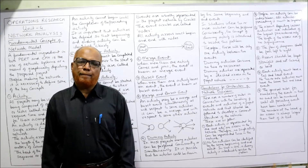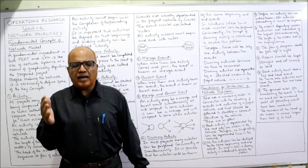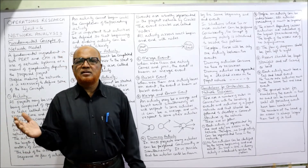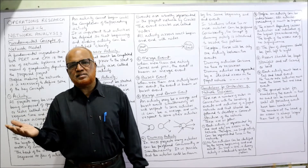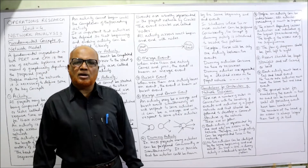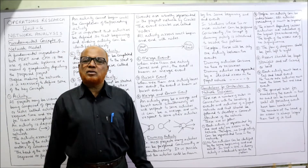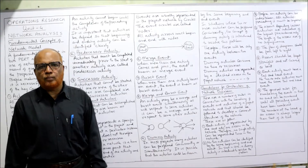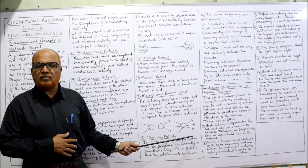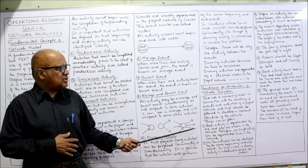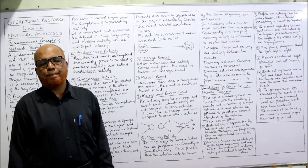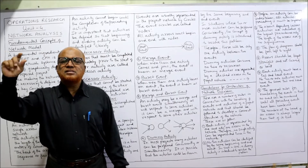These are the fundamental concepts of the network model. You must remember the terms: activity, event, predecessor activity, successor activity, merging event, bursting event, merging and bursting event, and dummy activity. In examinations, they will frequently ask 'what is dummy activity,' so this is very important to know.